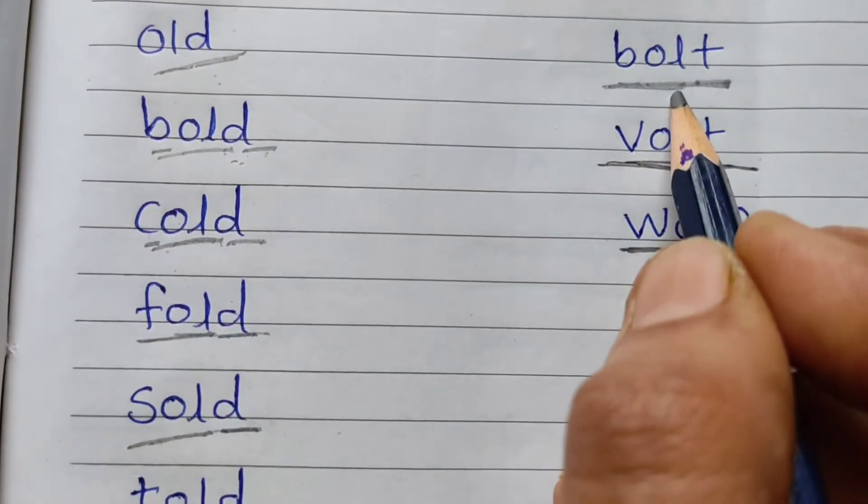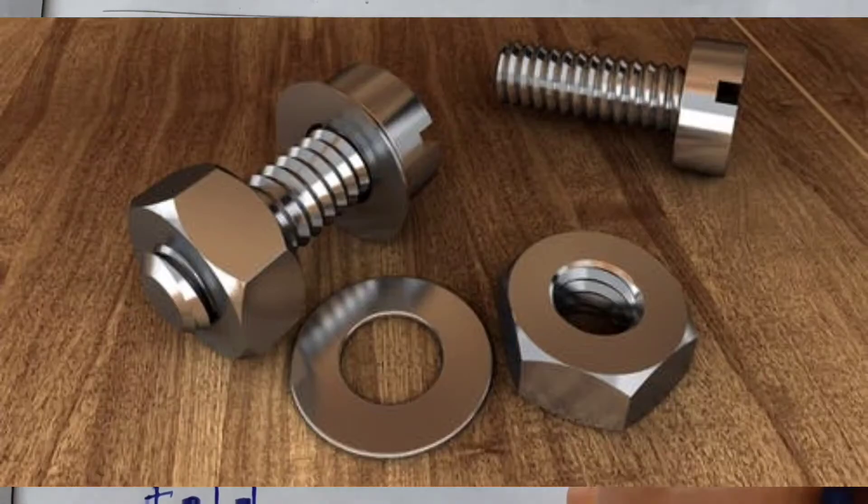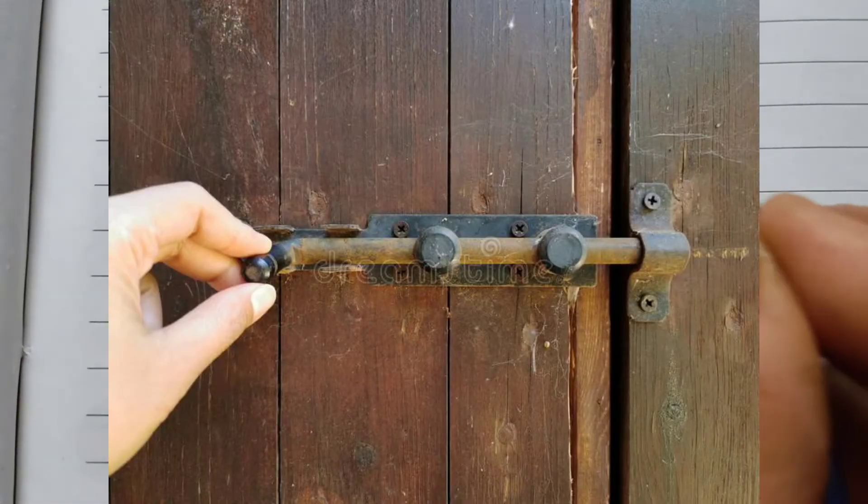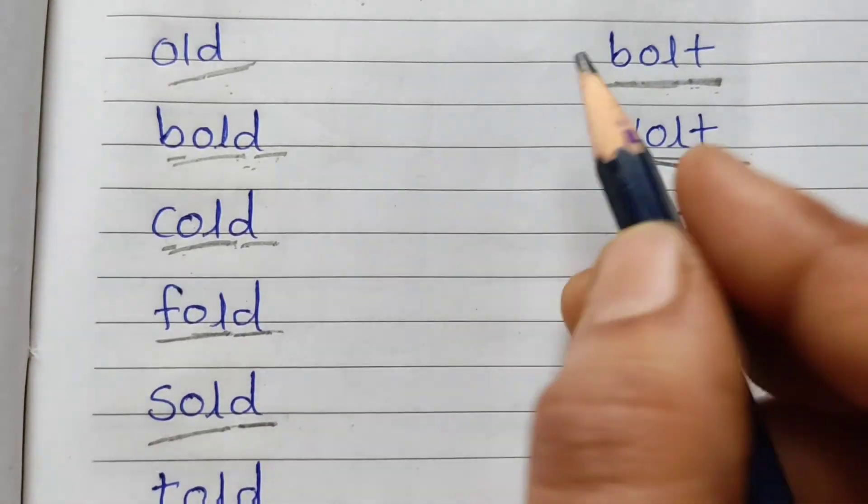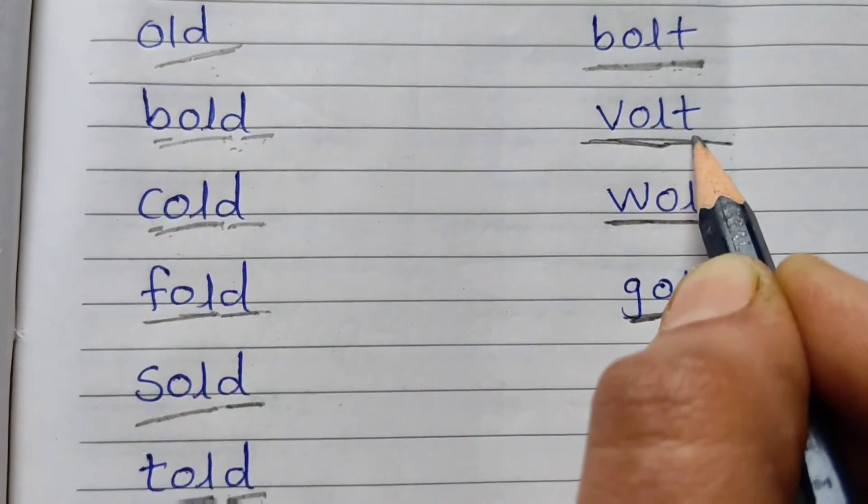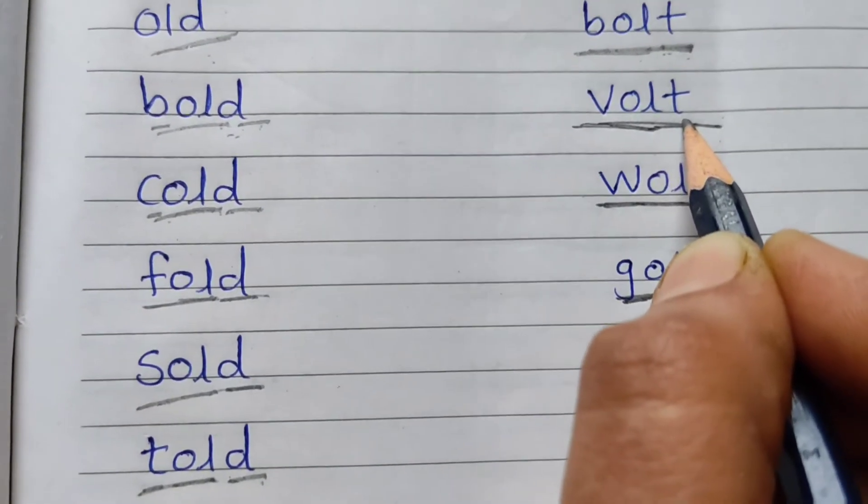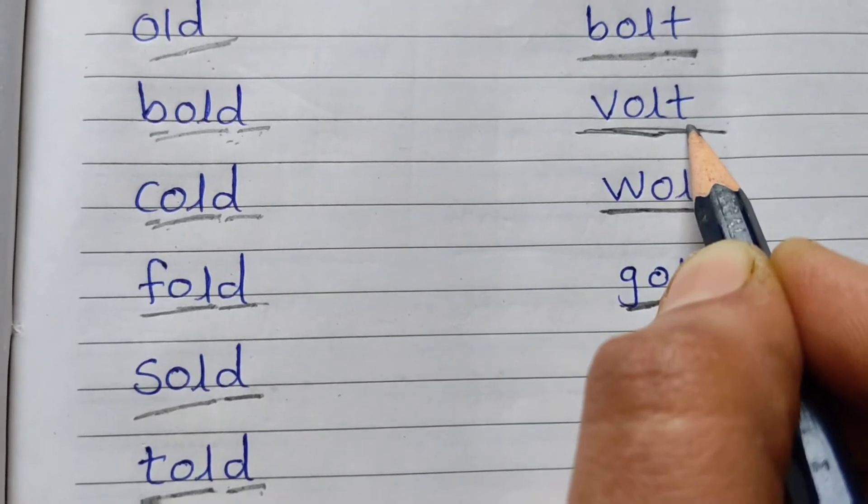Bolt. These are two types of bolts. This is first one, and this is second one. These are bolts. Okay? Volt means high current. Jis mein bohot zyadha current hota hai.